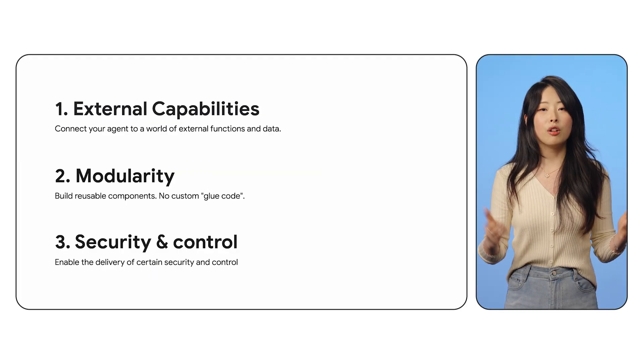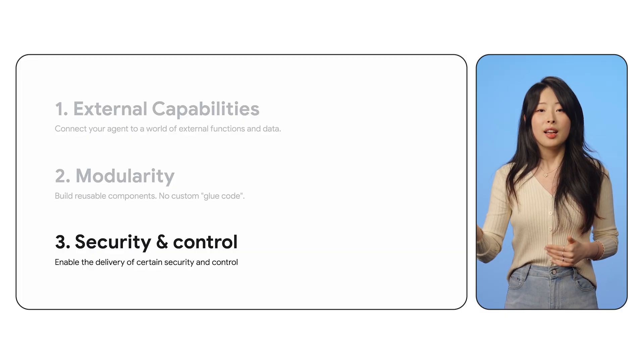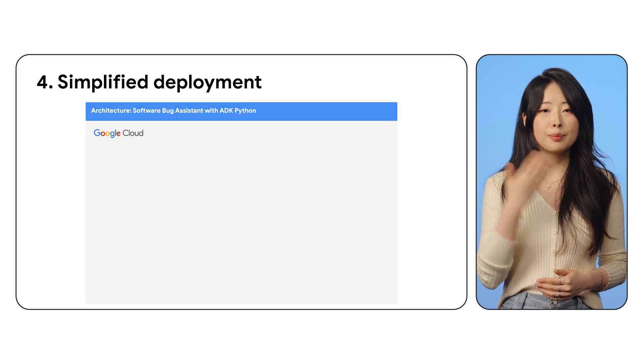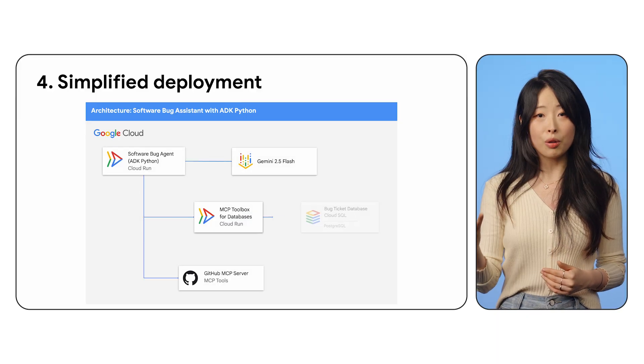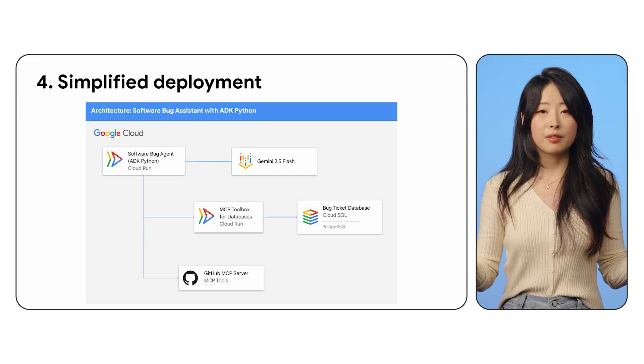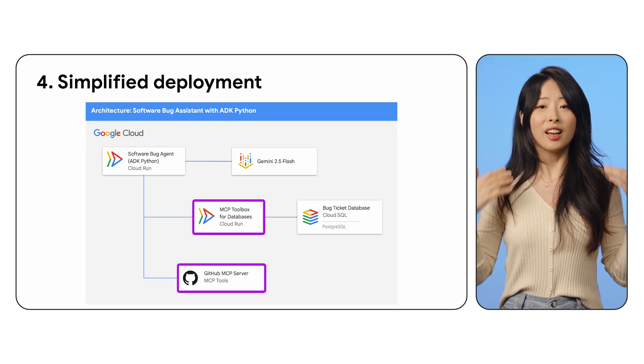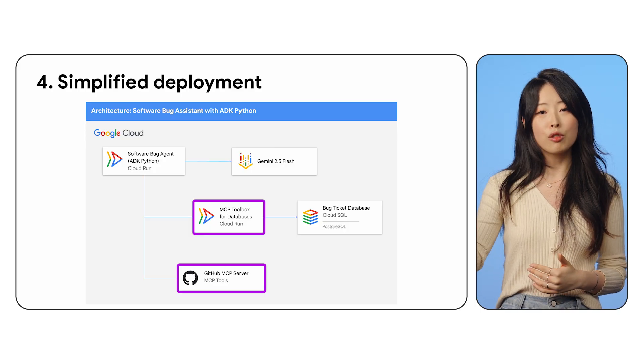MCP can also offer security and control, allowing you to define clear boundaries. And last but not least is a simplified deployment strategy. With a remote server, you can decouple tools from your agent, which makes scaling a lot easier in environments like Cloud Run or GKE. The bottom line is: connecting ADK with MCP allows your ADK agent to interact with the real world and make a truly agentic system.